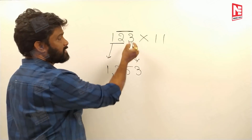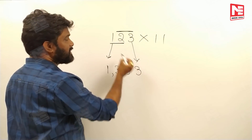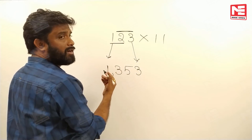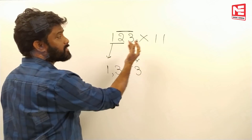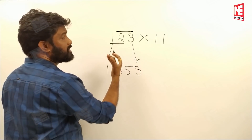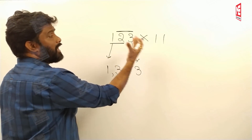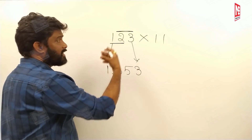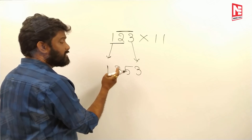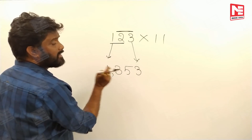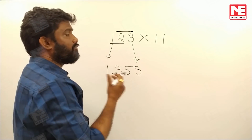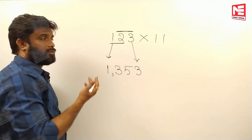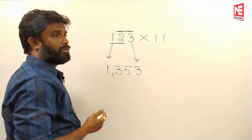To summarize the method: write the first and last digits as they are. For the middle digits, starting from the units place, add each pair of adjacent numbers and write the sum. Now let's take a four-digit number to show how this trick works.